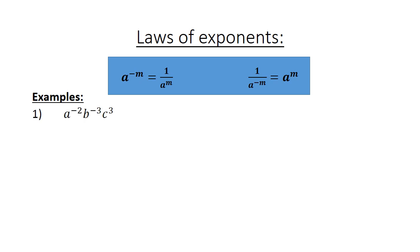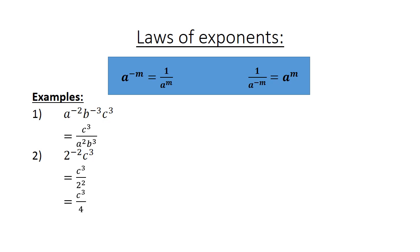Examples: a to the negative 2, b to the negative 3, c to the power of 3. Number 2: 2 to the negative 2, c to the power of 3 — the 2 to the negative 2 moves under the line and equals c to the positive 3 over 2 times 2, which equals c cubed over 4.